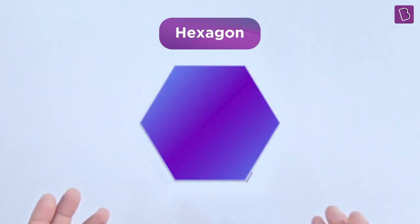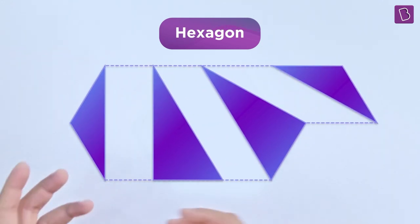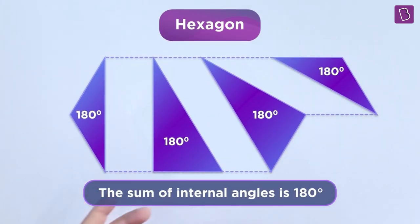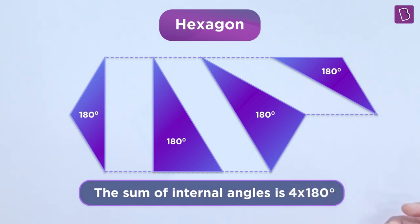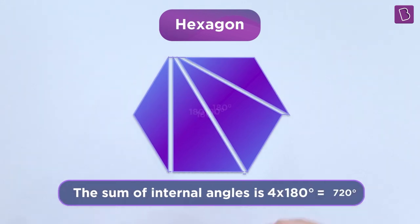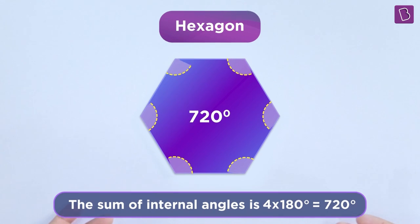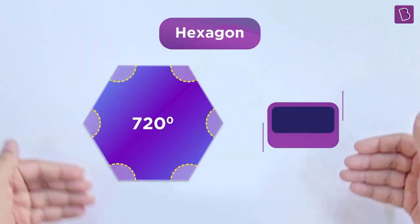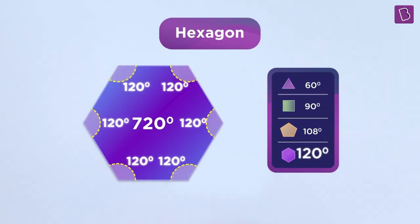Now, of course, coming to the hexagon. One, two, three, four triangles, six sides. Four triangles means the sum of interior angles is four times of 180 degrees. Four times of 180 degrees is 720 degrees. Divided by six gives us each of the regular interior angles to be 120 degrees. Great!